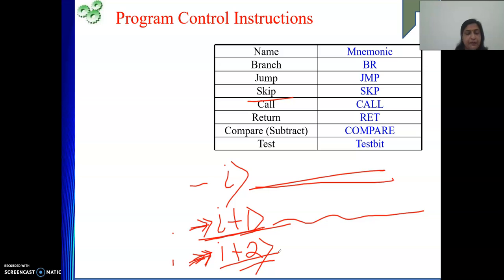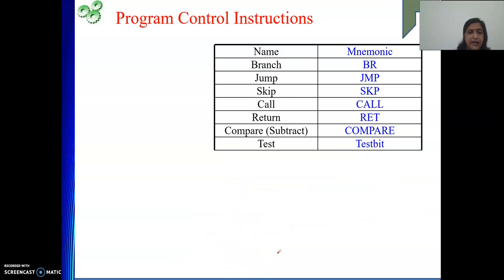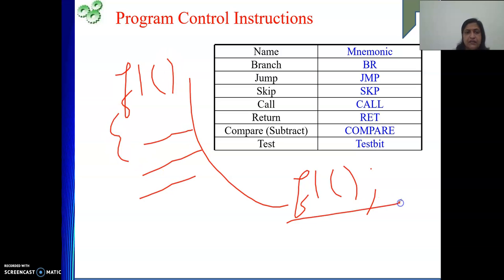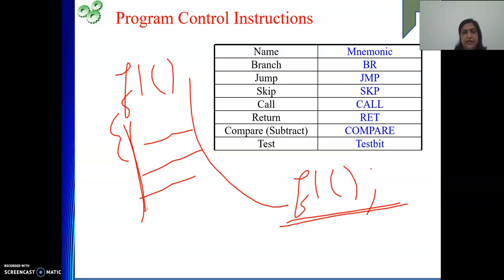Then there are four more very important instructions — call and return. Whenever we do assembly language coding, we also write functions. In assembly language terms, functions are called subroutines. To call a function in high-level language you simply write F1 and the function is called — your control moves to wherever F1's code is written and execution starts from there. But in assembly language we need to explicitly execute one instruction to call a function; only writing the name won't help.